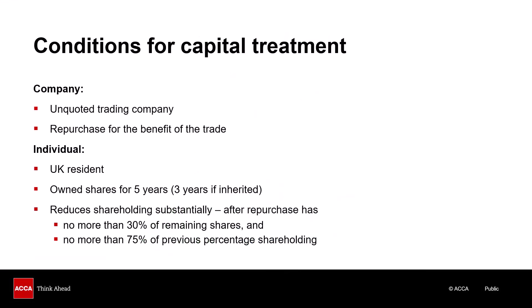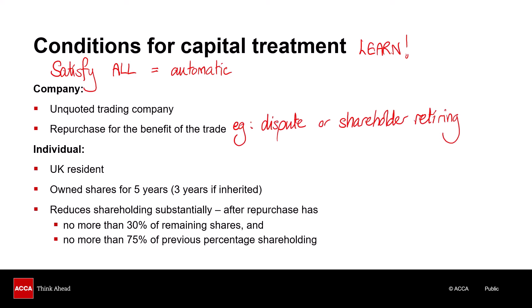So here are the conditions for the capital treatment — this is the bit you need to learn. We have some conditions that apply to the company and some that apply to the individual. Very importantly, all of these conditions have to be satisfied, and if they are satisfied the capital treatment happens automatically. If any of these conditions is not satisfied then we would have to use the income treatment — the dividend treatment. The company has to be an unquoted trading company and the repurchase must be for the benefit of the trade. Examples of that would be if we had a dispute between shareholders affecting the business, or possibly a shareholder retiring, which was our little scenario.